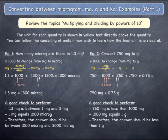As a final check, look at your starting quantity of 750 milligrams, which is less than 1,000 milligrams. 1,000 milligrams equals 1 gram, and therefore you expect an answer that is less than 1 gram.